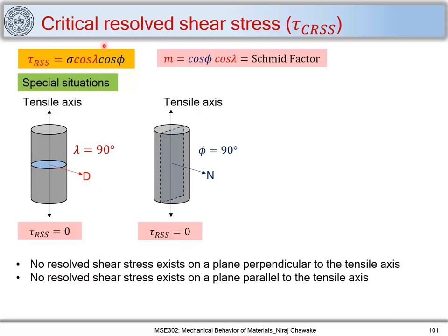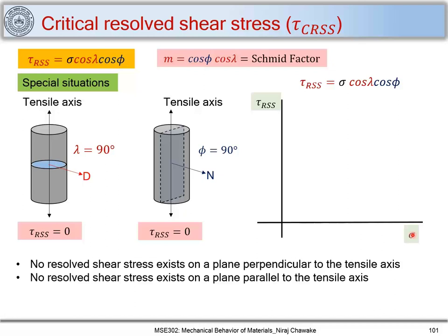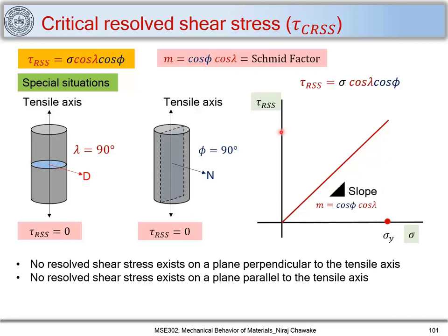Let's look at this relation in more detail. We have tau_RSS = sigma × cos(lambda) × cos(phi). If we plot tau_RSS versus sigma, we get a straight line where the Schmid factor M = cos(phi) × cos(lambda) is the slope. As stress increases, tau_RSS increases, and there will be a stage when sigma reaches the yield strength sigma_y of the material. Corresponding to sigma_y there will be a resolved shear stress on the slip plane.